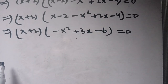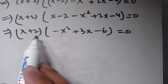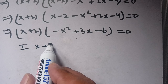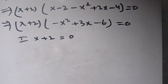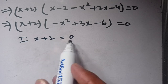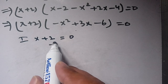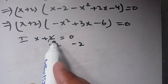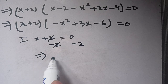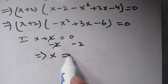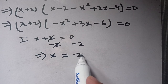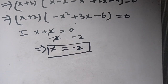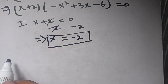We now equate each factor to zero. First, setting x plus 2 equal to 0 and subtracting 2 from both sides, the plus 2 and minus 2 cancel, giving x is equal to minus 2. So x equals minus 2 is our first solution.